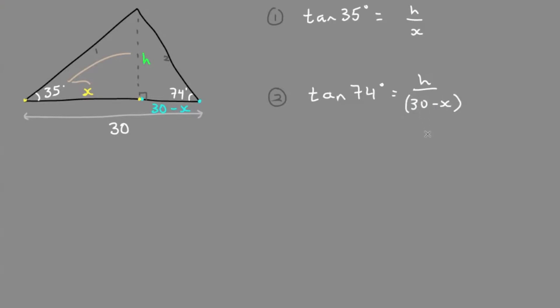We'll keep 30 minus x together using parentheses. Let's get rid of these fractions, make these a little bit nicer. Cross multiply the x out in front. x times tan of 35 equals the height, h. Height is our variable. Don't confuse that with hypotenuse. We just used h for height in this case.